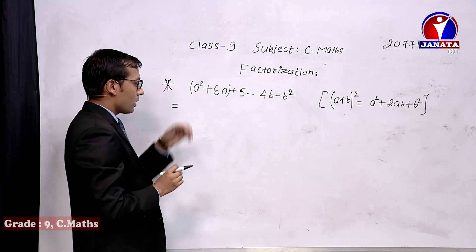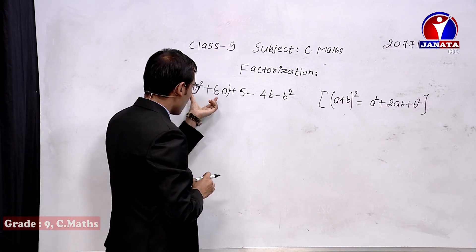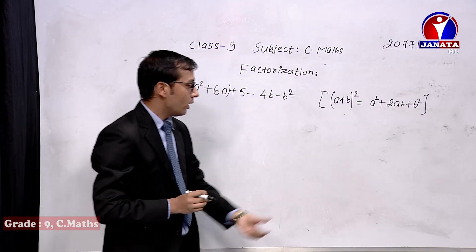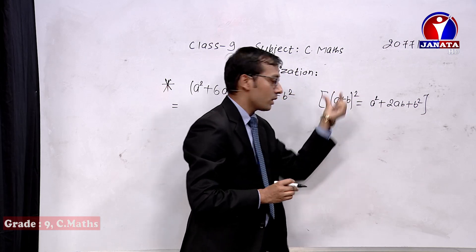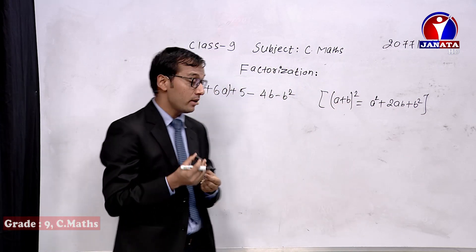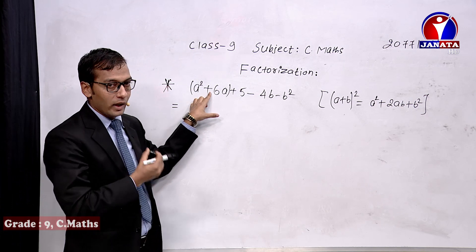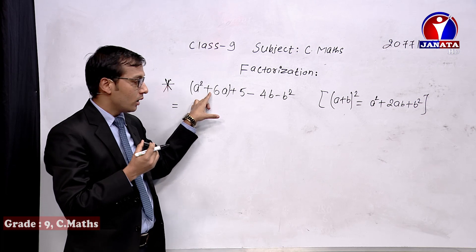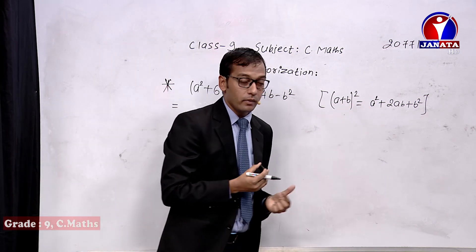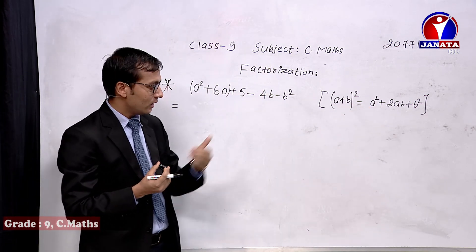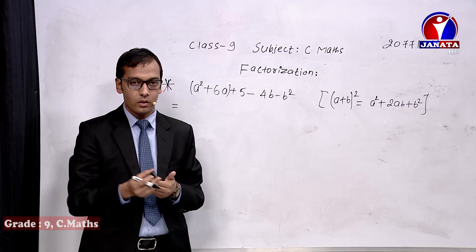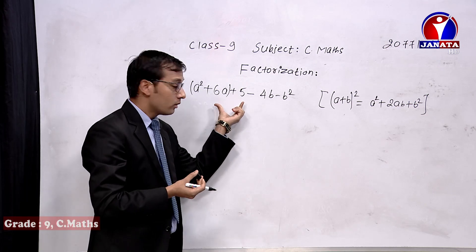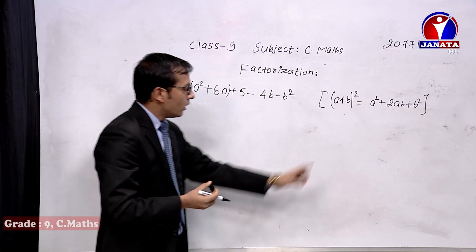I am converting the first two terms into the a² + 2ab + b² form. Let us tally the first two terms with this expanded form. Since the second term 6a is positive, we use the (a+b)² expanded form: a² + 2ab + b².